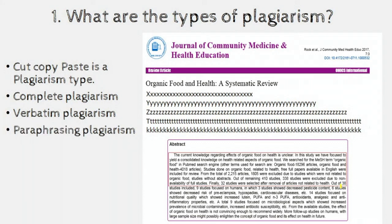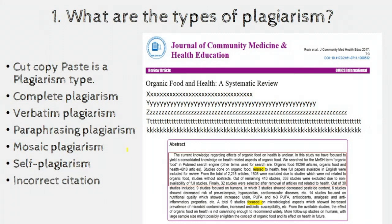Then we have paraphrasing plagiarism, where you change words here and there using a dictionary. That type is called paraphrasing plagiarism. We also have mosaic plagiarism and self-plagiarism — that is, taking your own article and submitting it to a different journal. Incorrect citation is another type: whenever you don't cite properly, that also comes under plagiarism. These are all common types, but the basis is the same — you are using somebody's ideas, thoughts, content, and language without citing the reference.